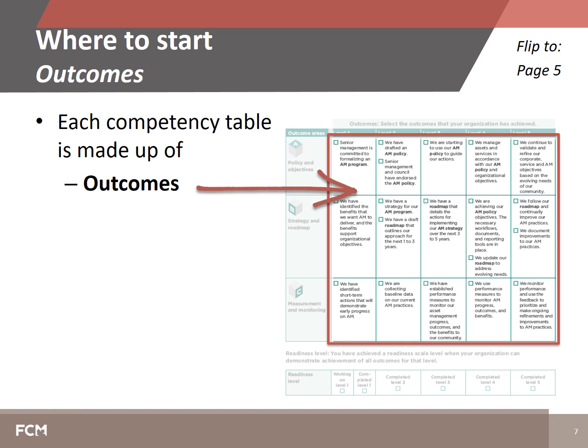For each level and outcome area, there is at least one outcome indicated. We've included checkboxes as an easy way to keep track of the outcomes that your municipality has achieved. The outcomes describe important steps in building asset management practices in your community, and they will be your focus as you conduct a self-assessment using the Asset Management Readiness Scale.